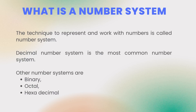Why is a number system and why do we need it in computers? Because computers cannot understand human languages, so to understand the commands and instructions given to computers, different number systems are used. There are different number systems such as binary system, the octal system, the decimal system, hexadecimal system, and so on.